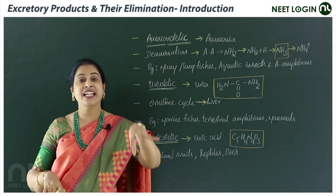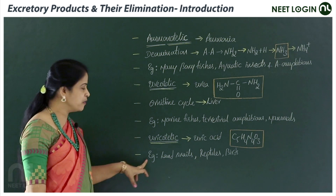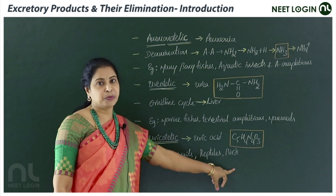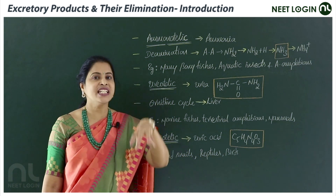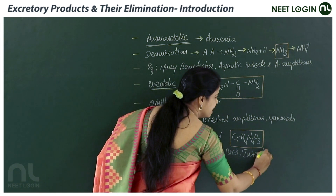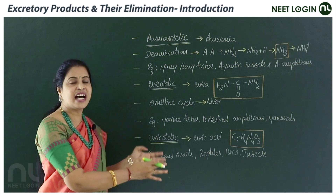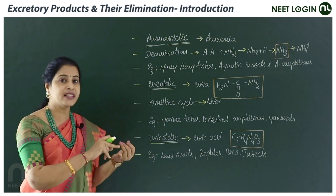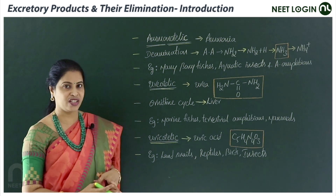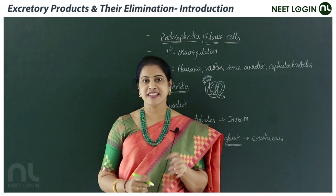Eliminating uric acid with minimum water is very advantageous for terrestrial animals in order to conserve water. Examples of uricotelic animals include land snails, reptiles, birds, and insects — including the cockroach, which you already know is a uricotelic animal. Focus on the toxicity, solubility, energy required for formation, and examples for each type of nitrogenous waste.